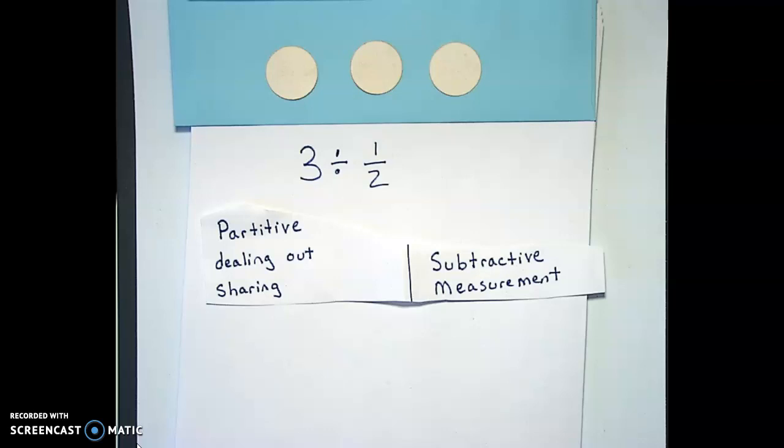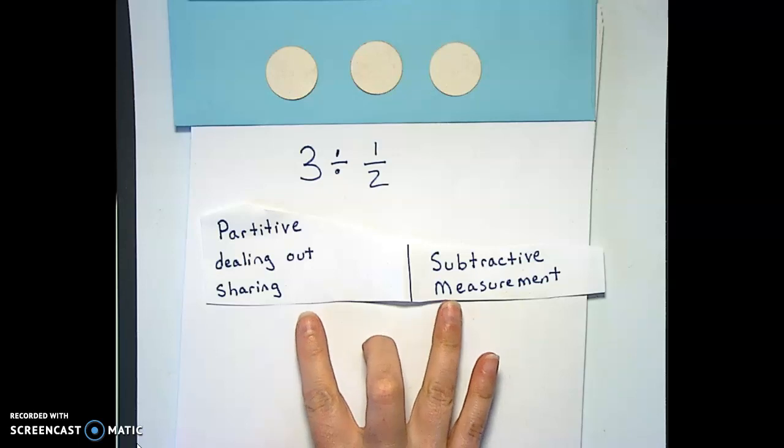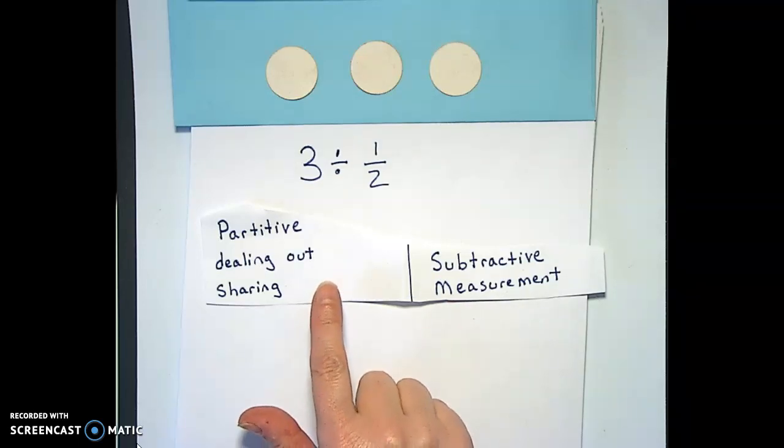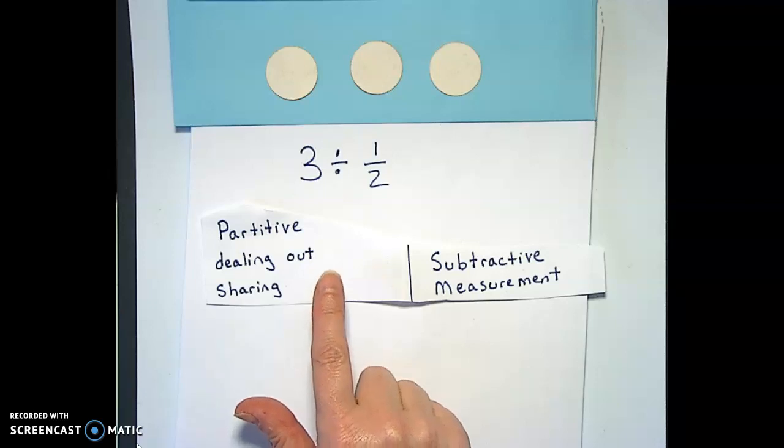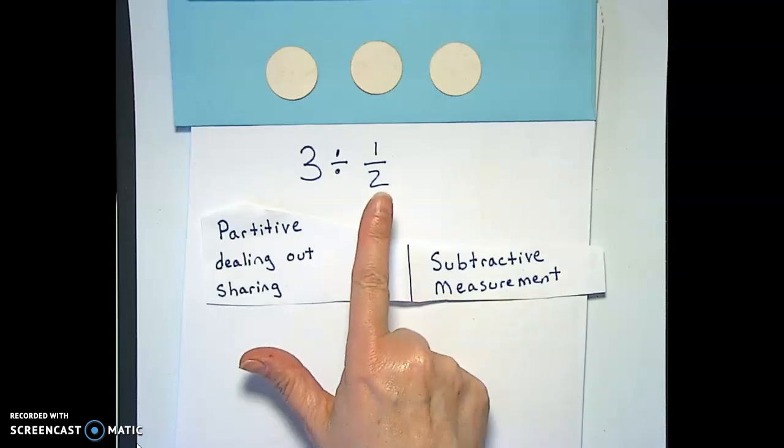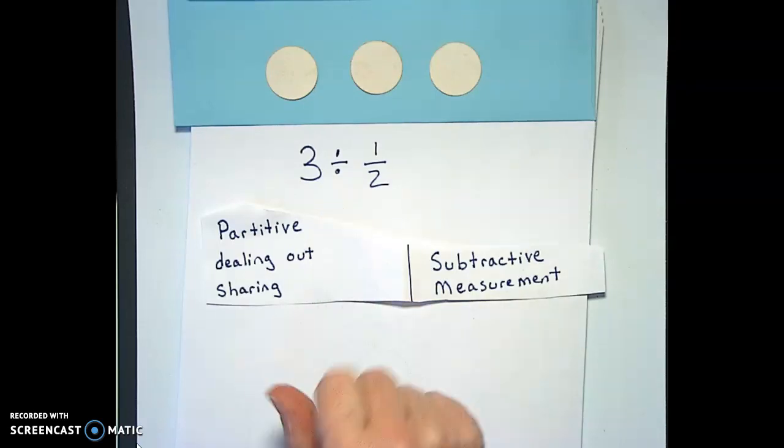For 3 divided by 1 half, I want you guys to decide which of these techniques you want to use. The partitive technique would be taking the 3 and breaking it evenly into half of groups. Subtractive or measurement concept would say how many 1 halves can we take away from 3.